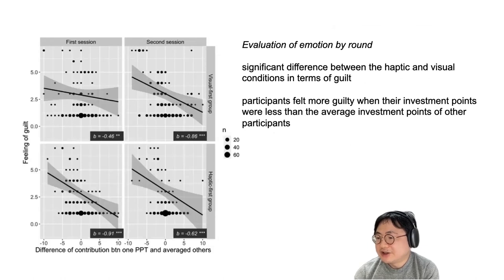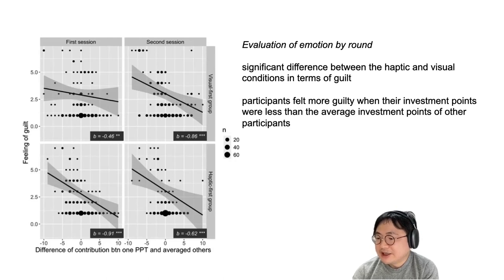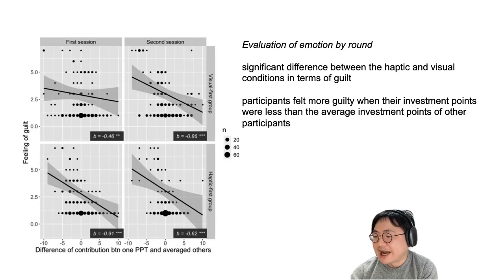Next, we examined the relationship between people's emotion and cooperative behavior. Of the eight emotional ratings given by participants after each round, there was a significant difference between the haptic and visual conditions in terms of guilt. The figure shows guilt for the difference between one participant and the average of others for each condition and session. It was found that participants felt more guilty when their investment points were less than the average of other participants, and felt less guilty when their investment points were higher.